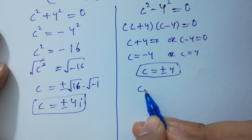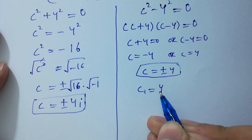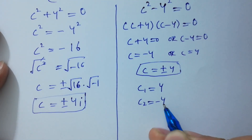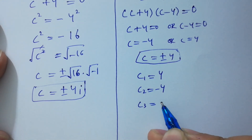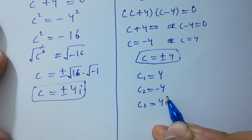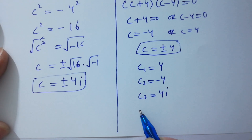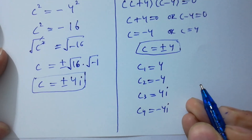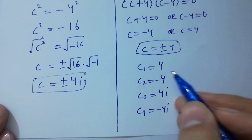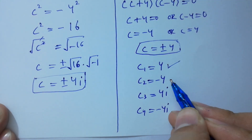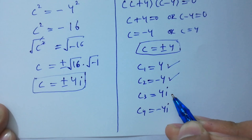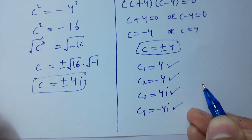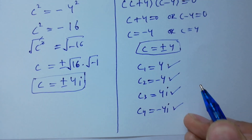So c1 equals 4, c2 equals minus 4, c3 equals plus 4i, and c4 equals minus 4i. Now I am going to verify c1 equals 4, c2 equals minus 4, c3 equals 4i, and c4 equals minus 4i, step by step.